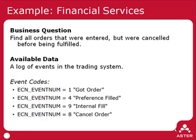We're going to find all orders that were entered or canceled before being fulfilled. The available data is a log of events, and each event has an event code which can be one of: got order, preference filled, internal filled, or cancel order. We want to find all orders that went through a got order state — meaning they were entered but were canceled before being filled, either via preference or internal.